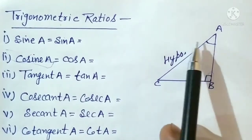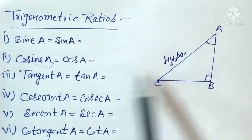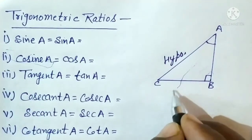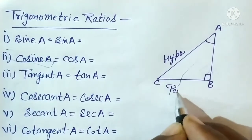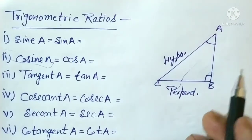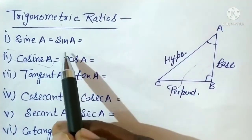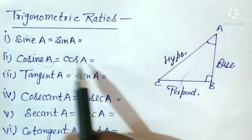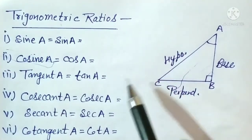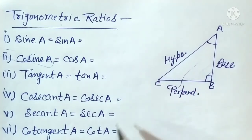The trigonometric ratio we are finding corresponds to angle A, so the side opposite to angle A will be the perpendicular. The third side is the base. So first, we have sine A. Sine A equals perpendicular upon hypotenuse.